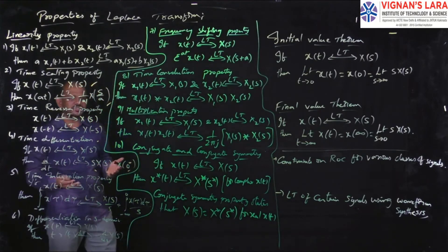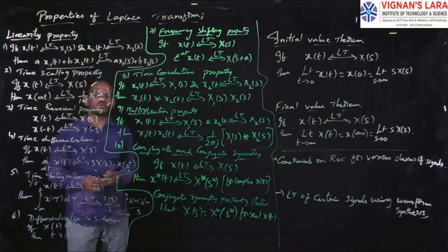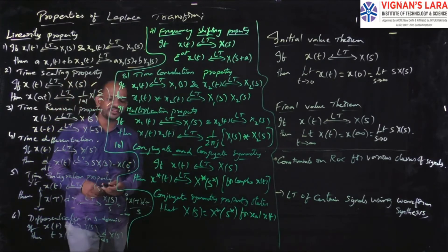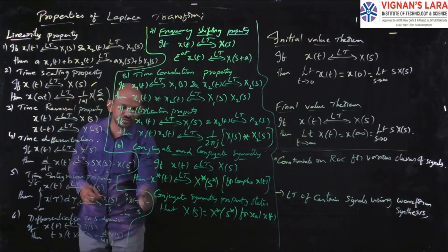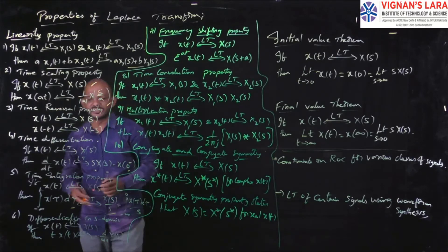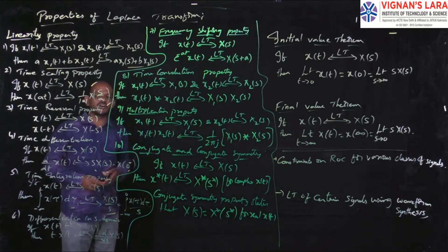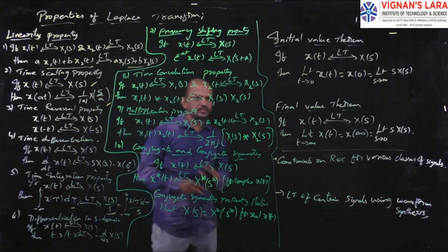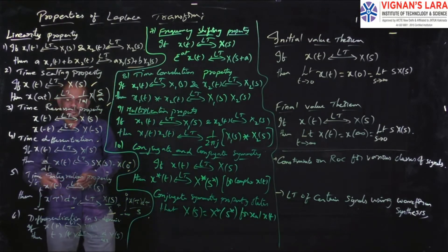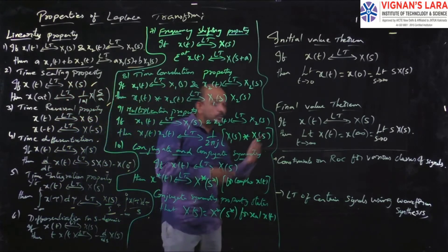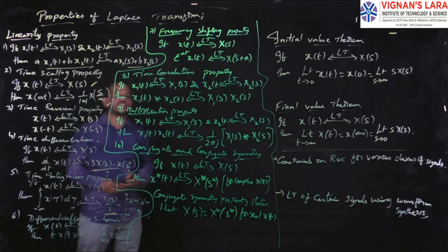Time integration: if x(t) has Laplace transform X(s), then the integral from −∞ to t of x(τ)dτ will have Laplace transform X(s)/s plus the integral from −∞ to 0 of x(τ)dτ divided by s. At minimum, remember that the integral of x(t) has Laplace transform X(s)/s. The perfect expression is useful when you go for the proofs, so I am giving both the simplified and full expressions for time differentiation and time integration.